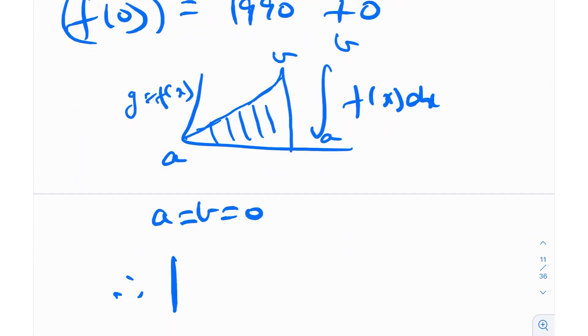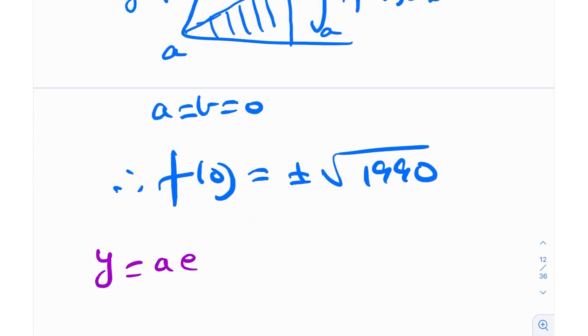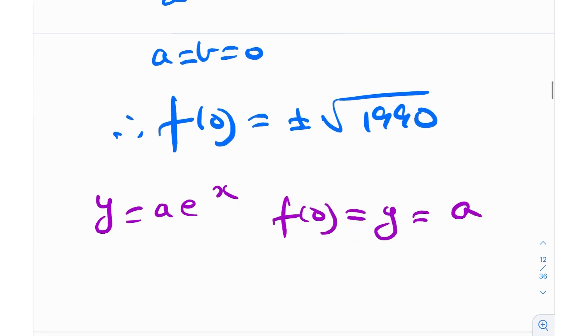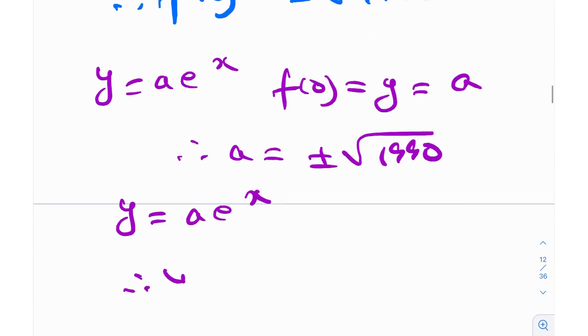This essentially becomes that the integral is 0, and therefore we have f(0)² = 1990. So f(0) is nothing but ±√1990. That's great because now, what was y? y was A·e^x, and I put x = 0, so f(0) = y = A. Therefore A = ±√1990, and y was A·e^x. Therefore y = ±√1990 · e^x.